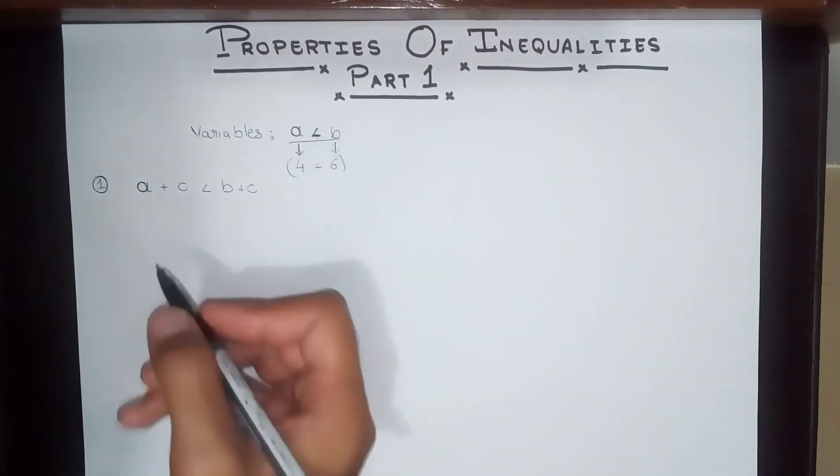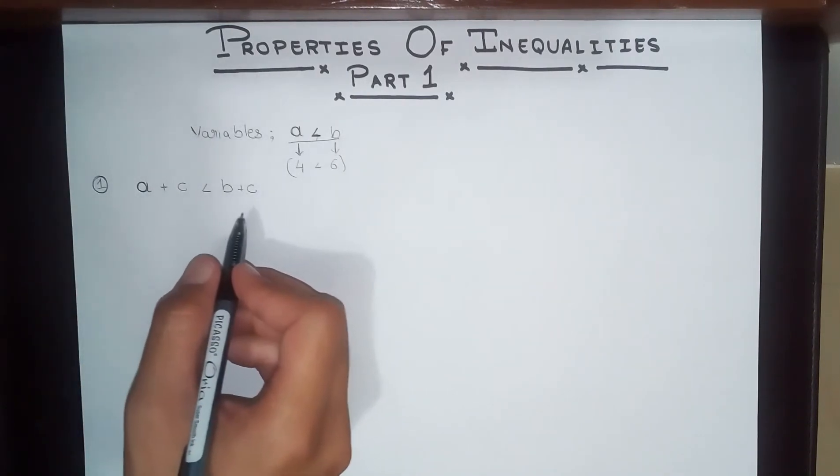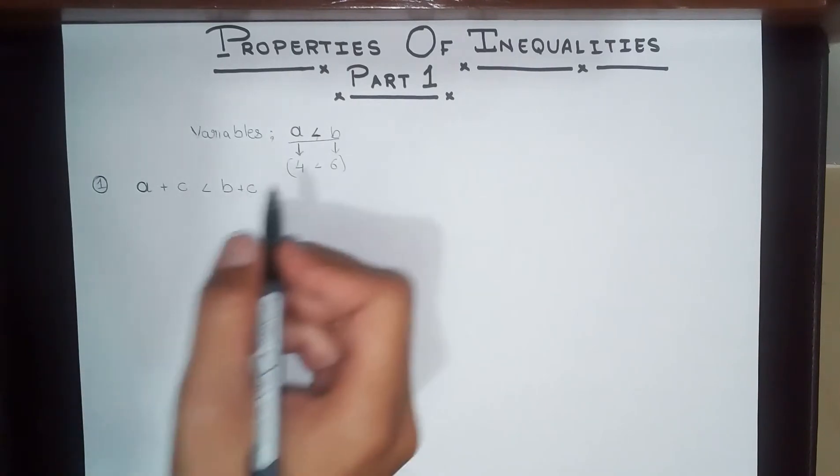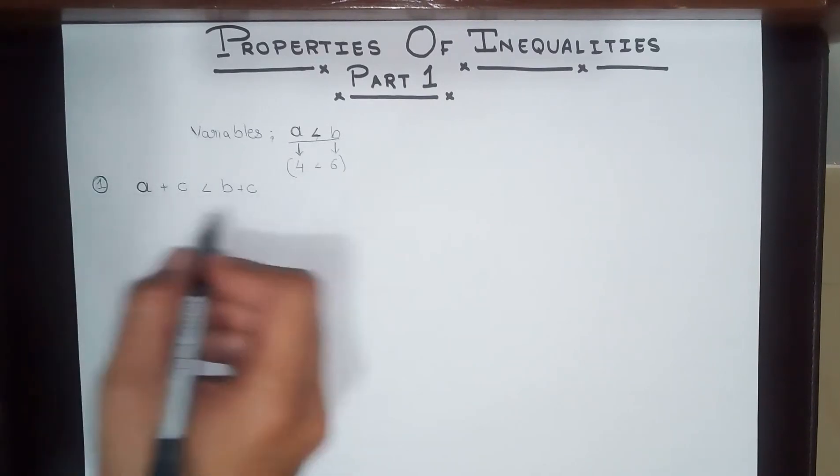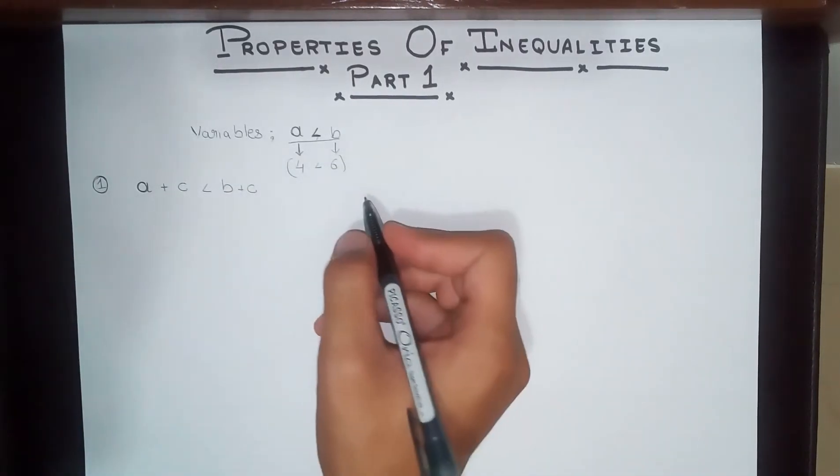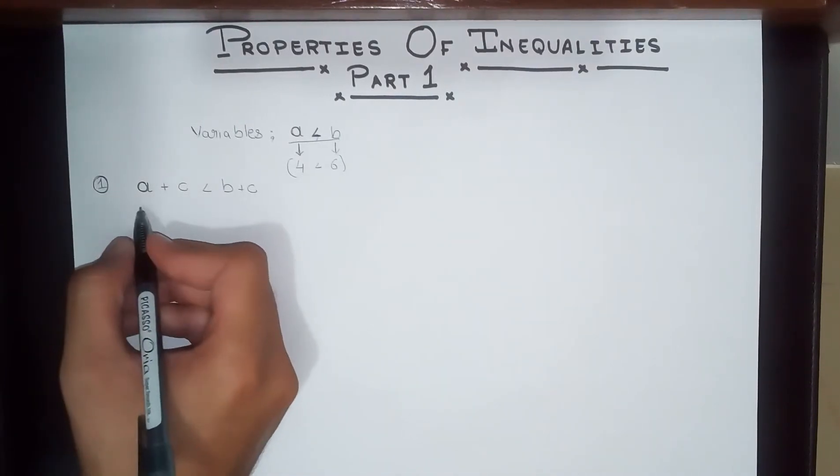Right now we have just added C to both sides equally, and what we will always find is that A plus C is going to be less than B plus C. This is exactly how we started off. To give it a more solid base, let's see if this is true using the specific terms.